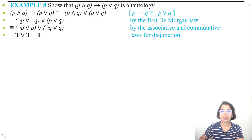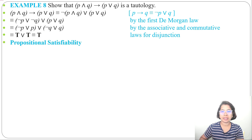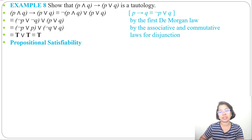In today's lecture, I discussed the extension of De Morgan's law, and how we can prove two compound propositions are logically equivalent without a truth table. In the next lecture, I'll discuss propositional satisfiability. If today's lecture was helpful, please like, share, and subscribe. Thank you.